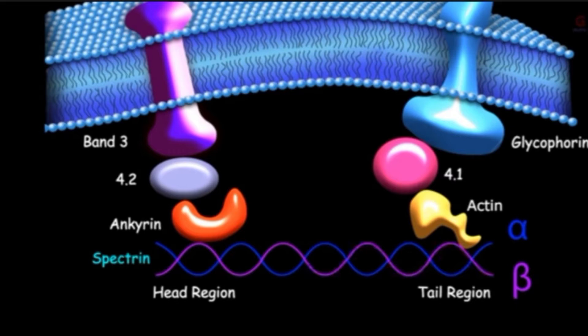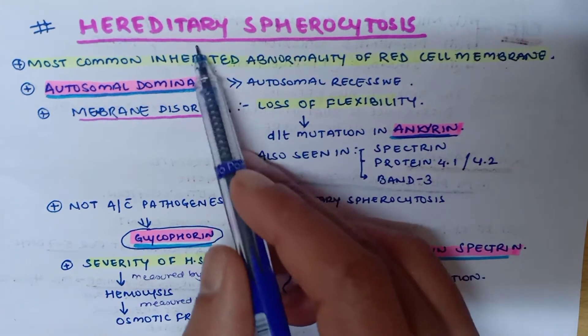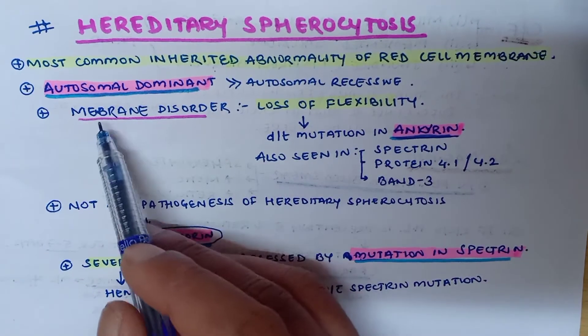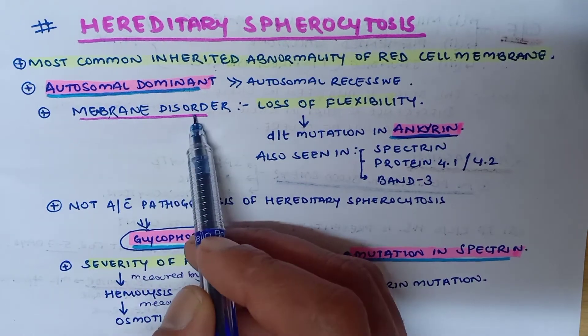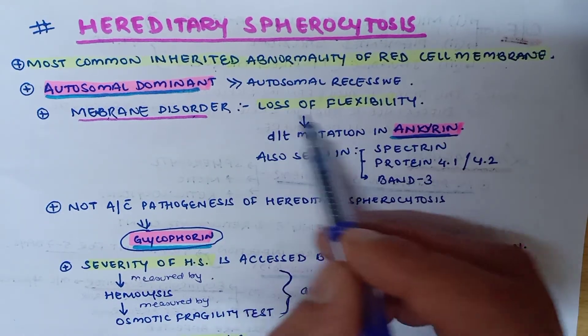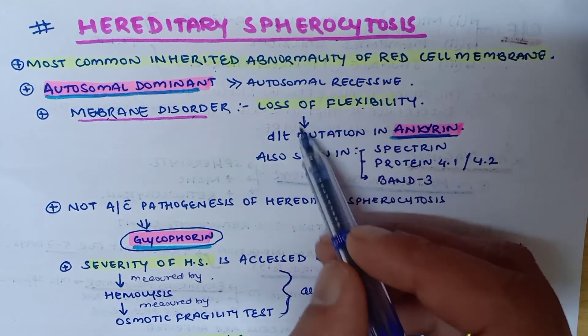The most common mutation in the development of hereditary spherocytosis is seen in the protein ankyrin. After ankyrin, the most common mutation is seen in band 3, which is present in the cell membrane of RBC — band 3 is an anionic channel. Hereditary spherocytosis is a membrane disorder, resulting in loss of flexibility, occurring due to mutation in ankyrin protein.